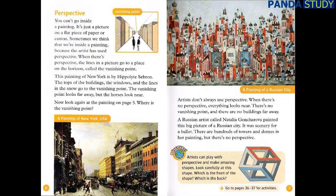The vanishing point looks far away, but the horses look near. Now look again at the painting on page 5. Where is the vanishing point? Artists don't always use perspective. When there's no perspective, everything looks near. There's no vanishing point, and there are no buildings far away. A Russian artist called Natalia Goncharova painted this big picture of a Russian city. It was scenery for a ballet. There are hundreds of towers and domes in her painting, but there's no perspective.